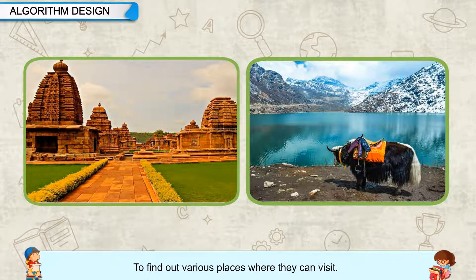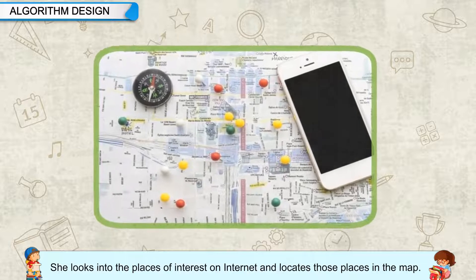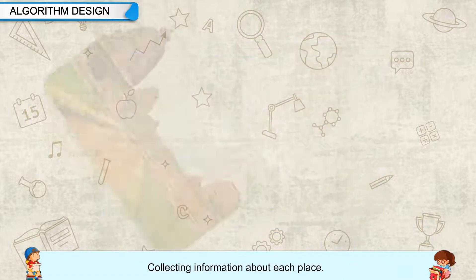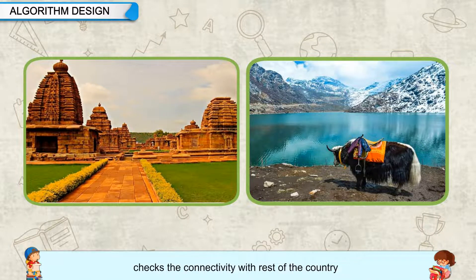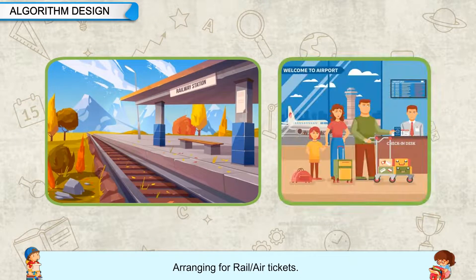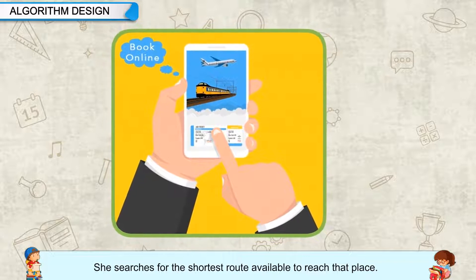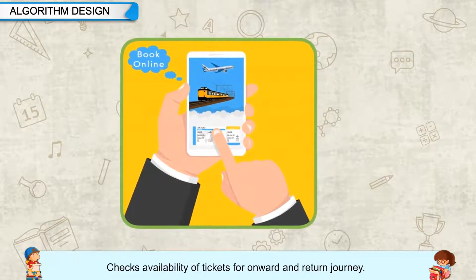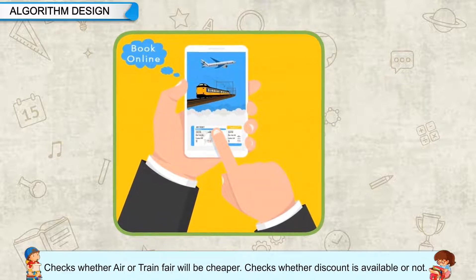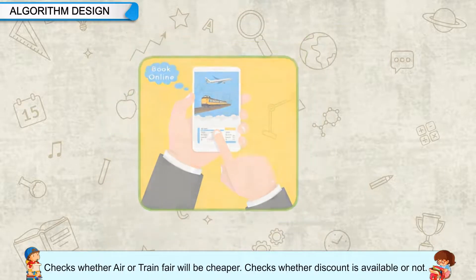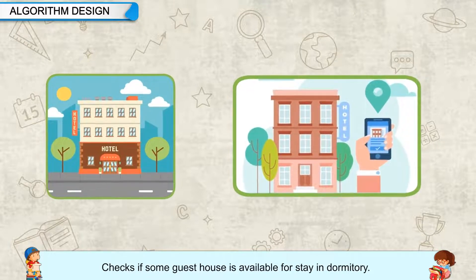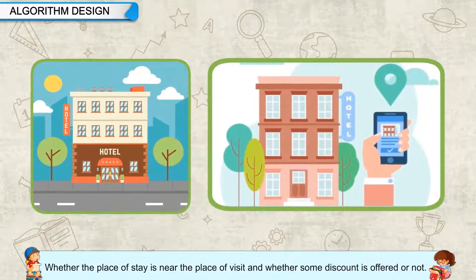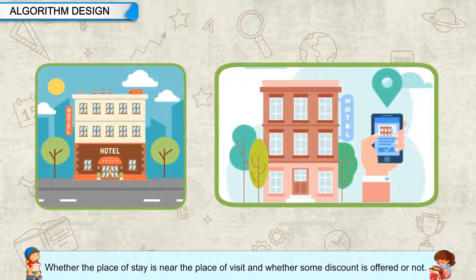To find out various places to visit: she looks into places of interest on the internet and locates those places on a map. She checks what places they can visit, analyzes the historical importance of each place, and checks connectivity with the rest of the country. She searches for the shortest route, checks availability of tickets for onward and return journey, checks whether air or train fare will be cheaper, checks whether a discount is available, and arranges lodging and boarding at different hotels — including whether a guest house with dormitory is available, whether the place of stay is near the places of visit, and whether any discount is offered.